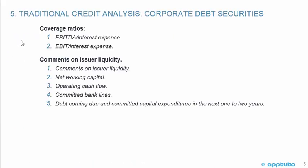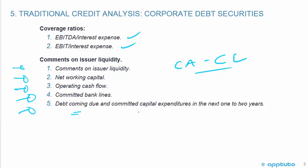For coverage ratios in traditional credit analysis, we may look at EBIT over interest expense and EBITDA over interest expense. On issuer liquidity, we consider net working capital (current assets minus current liabilities), operating cash flows, committed bank lines, debt coming due, and committed capital expenditures over the next one to two years. Debt maturity schedules are typically found in the notes to financial statements, while forecasting committed capital expenditures can be more challenging.